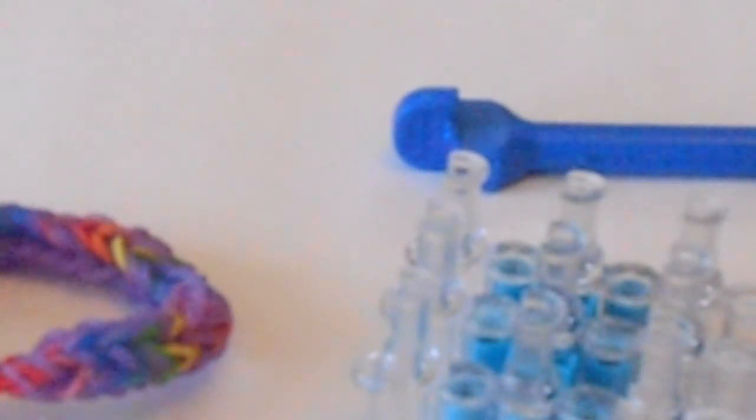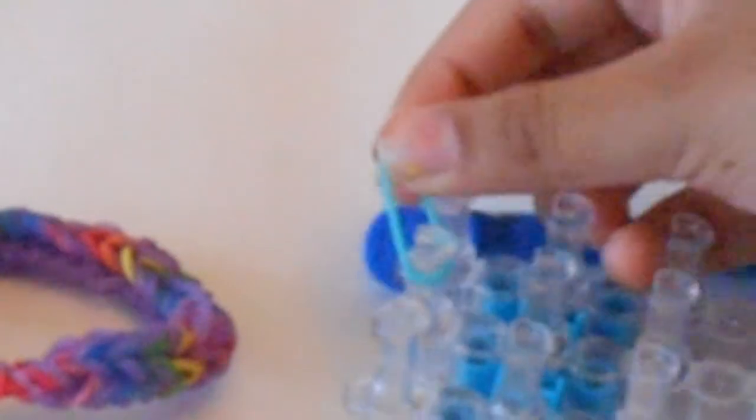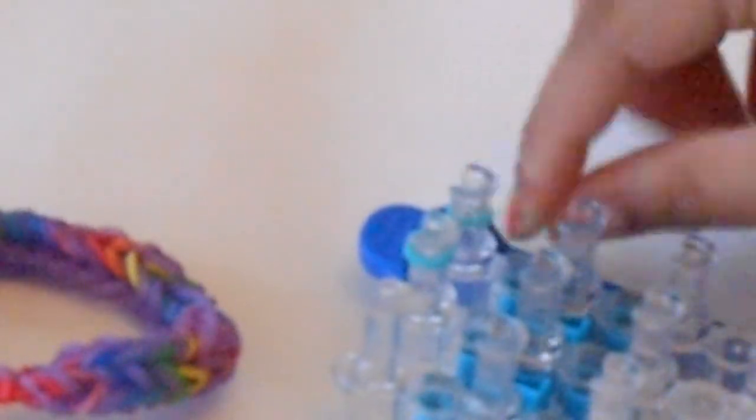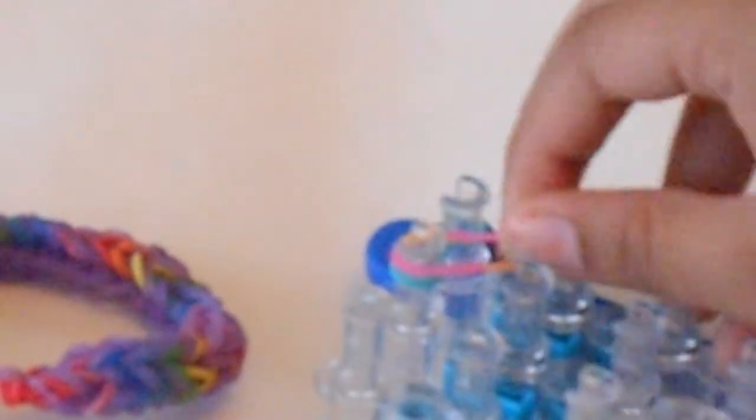So I'm just going to take this type of blue and just make a figure eight across. And then take two rubber bands and make one figure eight going like that and another figure eight going like that, push down.